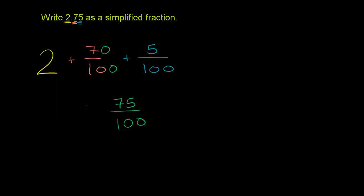So this can be rewritten as 2 and 75 hundredths. And we saw that in the last video. You would read this as 2 and 75 hundredths. Now, we aren't in a completely simplified fraction yet because 75 and 100 have common factors.